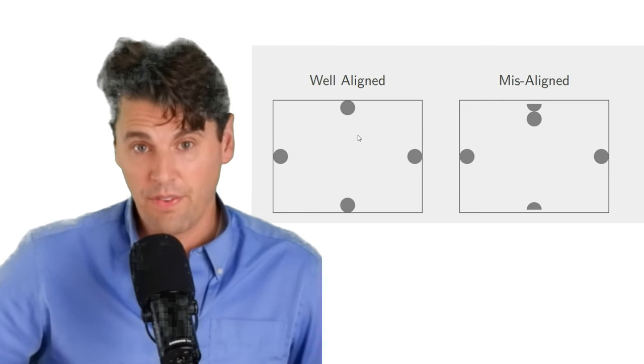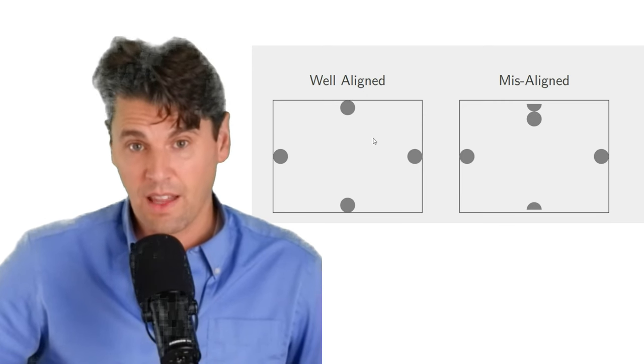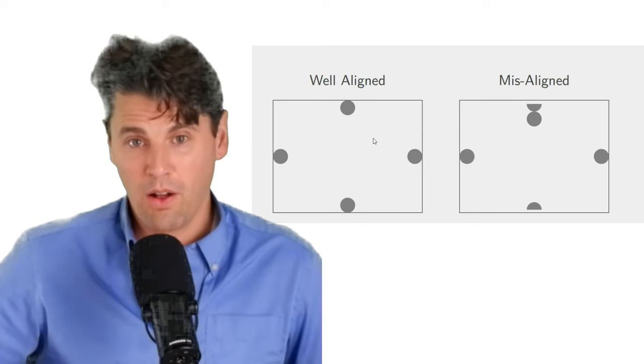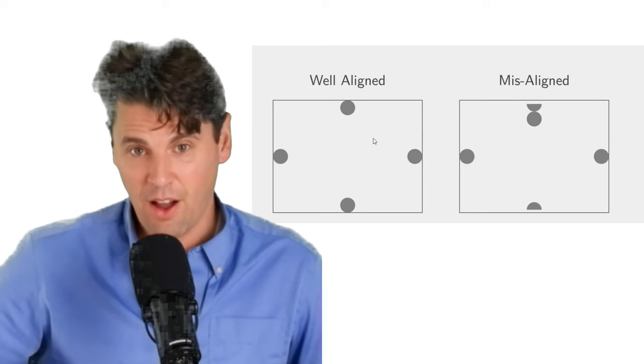In the case of the well-aligned light field, you can see an image like this one where we have the four coins and they're each well positioned within our x-ray image.